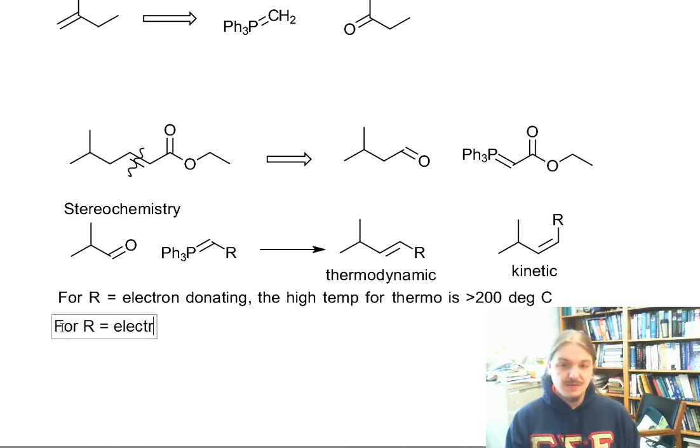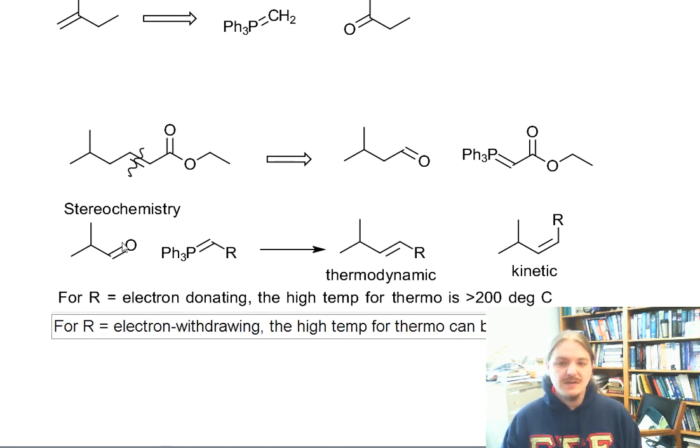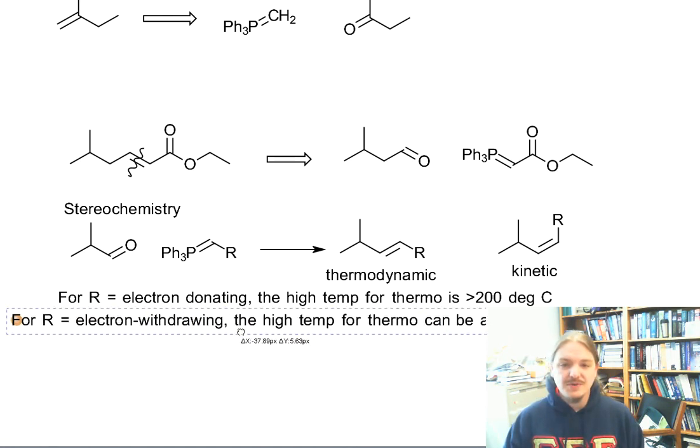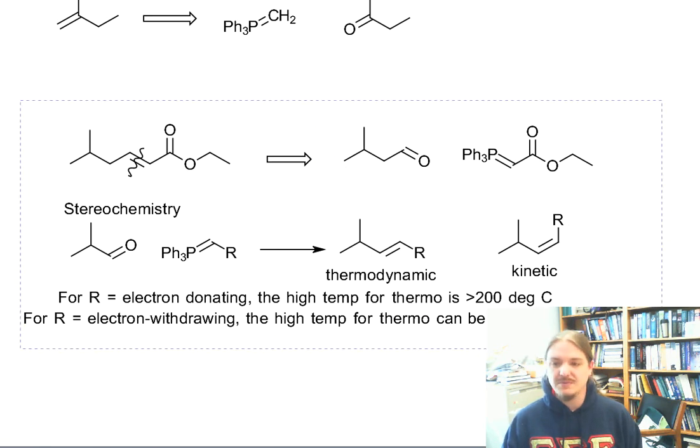When R is electron withdrawing, we get a different situation. When R is electron withdrawing, the high temperature needed for thermo can be as low as room temperature. That's a really big difference and one of the reasons why someone might want to use the stabilized ylides that use electron withdrawing groups.